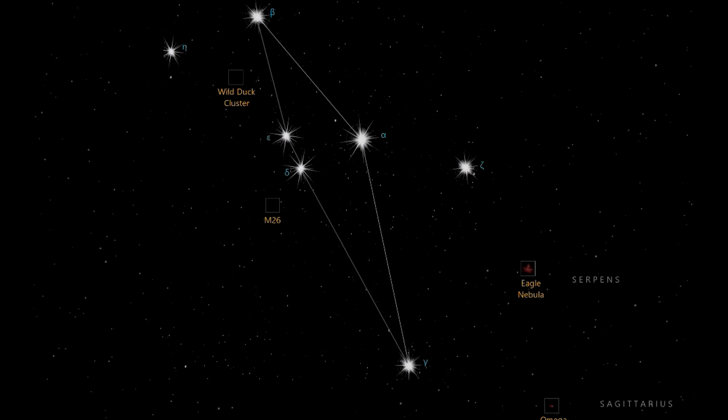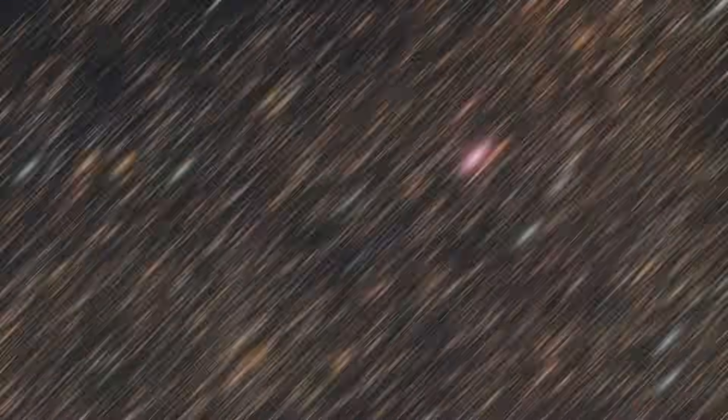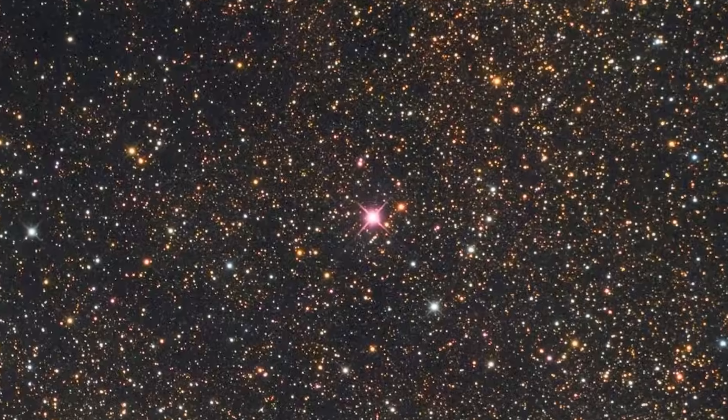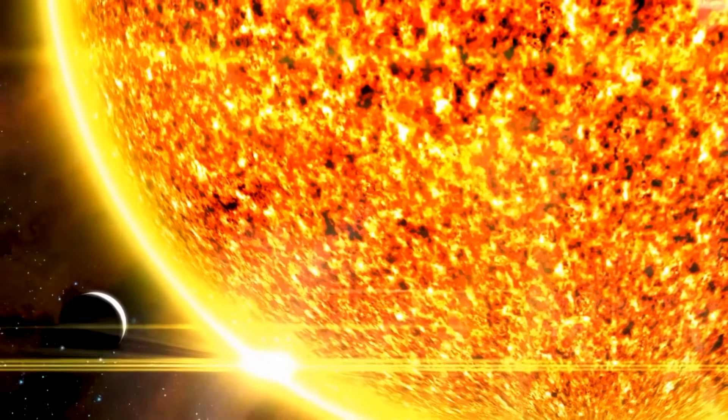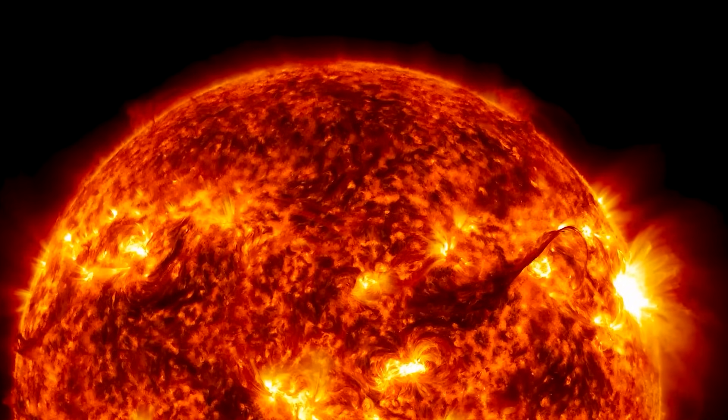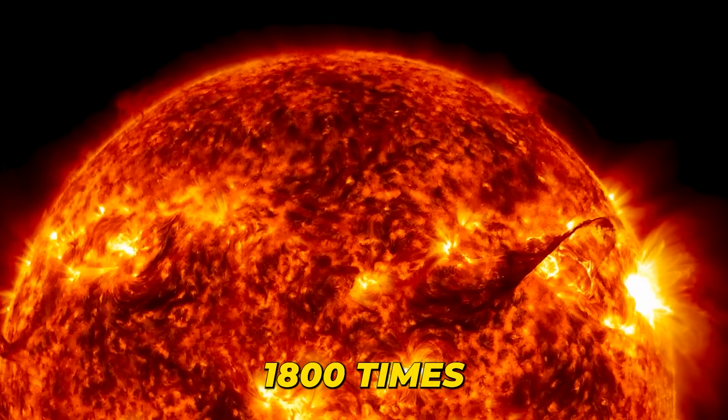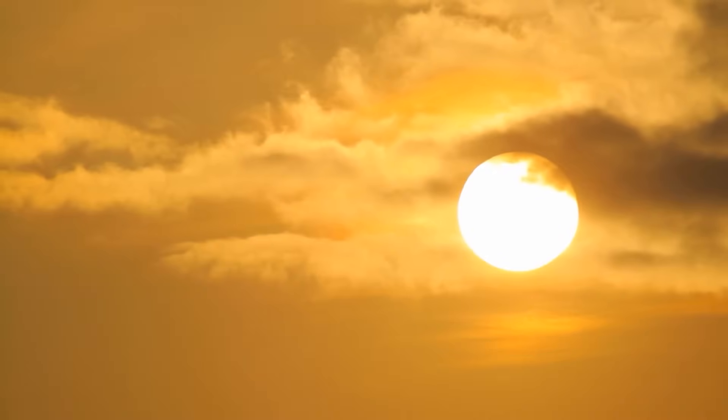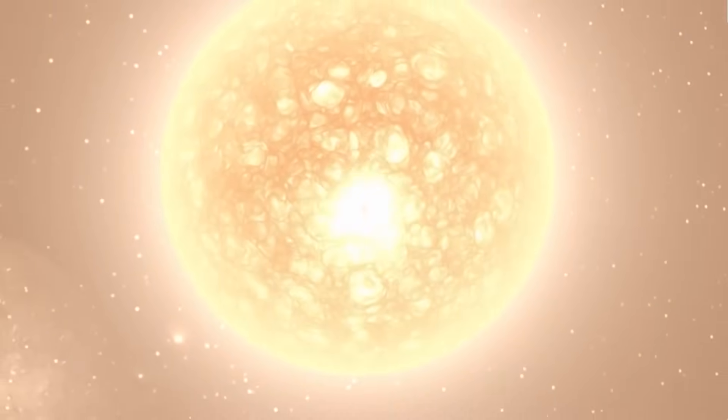UY Scuti, located in the Scutum constellation, is an awe-inspiring star that stands out in the universe. It is known to be one of the largest known celestial bodies, with mind-boggling dimensions. Its estimated radius is about 1,800 times greater than that of the sun. To put it into perspective, its volume could accommodate nearly 5 billion suns.